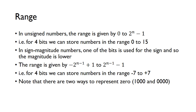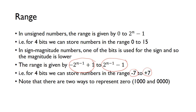For unsigned numbers, the range goes from 0 up to 2 to the n minus 1. So for 4 bits, we can store numbers from 0 up to 15. But in sign-magnitude format, we use one of the bits to store the sign, so we have fewer bits available for the magnitude. The range is actually minus 2 to the n-1 plus 1, up to 2 to the n-1 minus 1 — so for 4 bits, that's minus 7 up to plus 7.